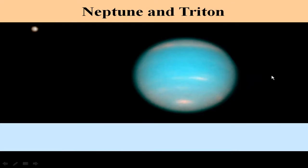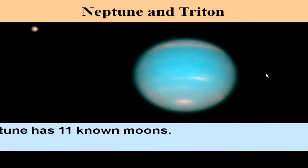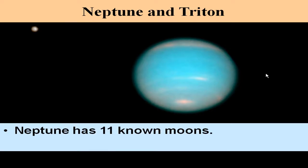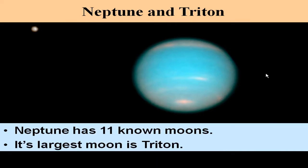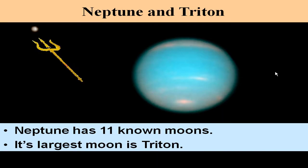Here's Neptune and its largest moon, Triton. Neptune has 11 known moons, the largest being Triton, which can be identified as a small dot in the corner of this image.